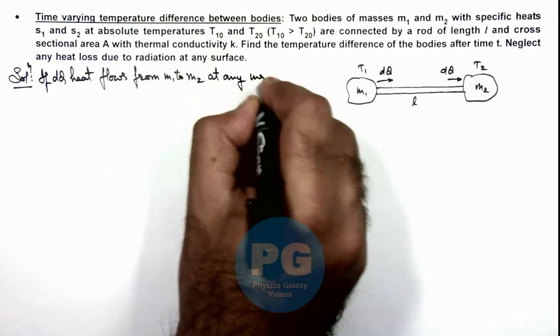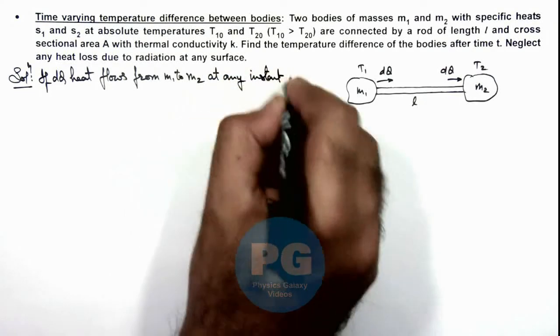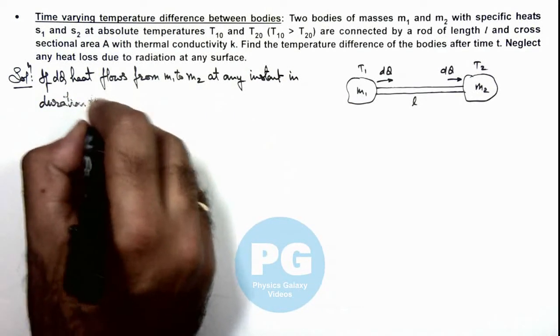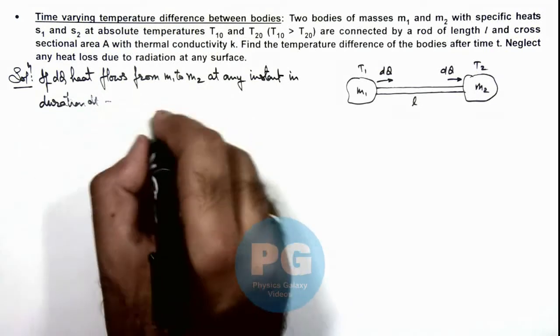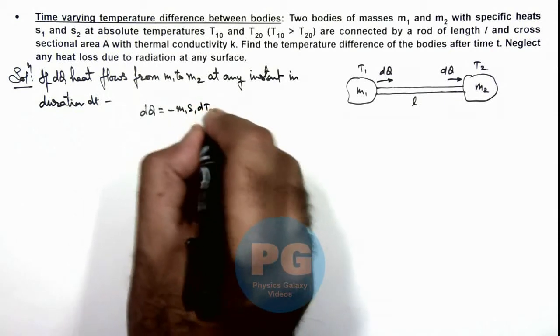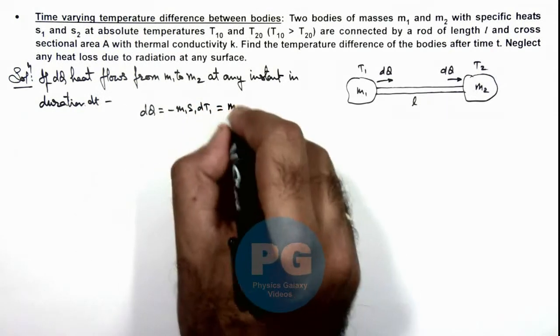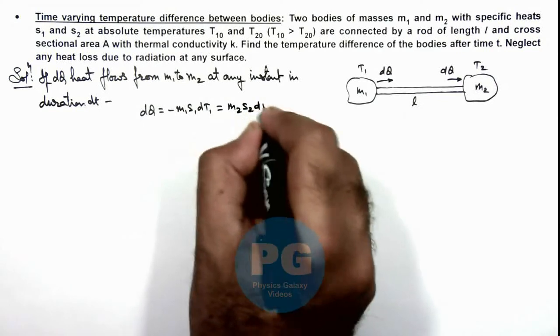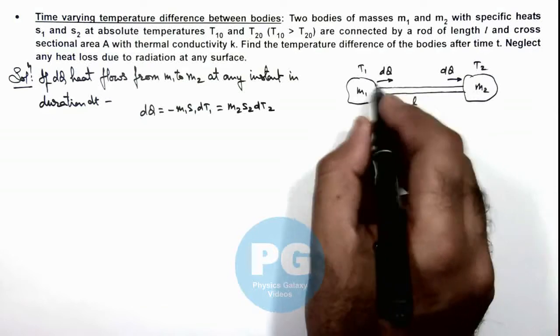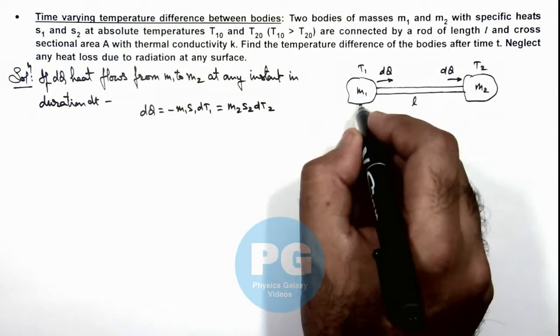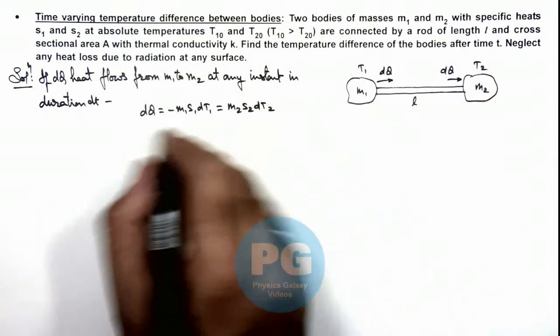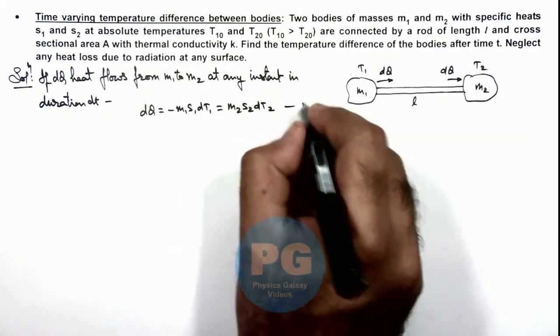In duration dt, then we can write the value of dQ is equal to -m₁s₁dT₁, which is the same as m₂s₂dT₂. If its temperature increases due to this loss of heat, if its temperature decreases by dT₁ and its temperature increases by dT₂, so this is one relation we are having. This is equation 1.